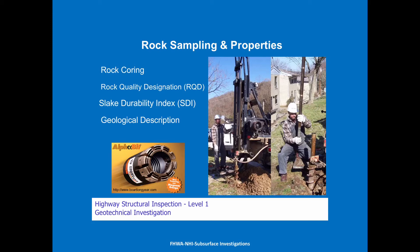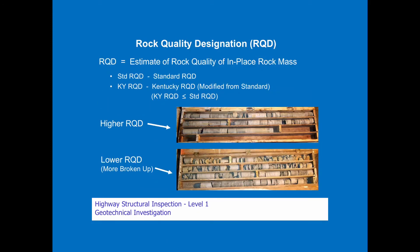Now rock sampling and properties. We're going to talk about rock coring, the Rock Quality Designation or RQD, the Kentucky RQD, the Slake Durability Index, and the Geological Description. RQD is the estimate of rock quality of in-place rock mass — sections that are four inches or larger get counted and get a percentage of the total run of five feet. Kentucky RQD is where we actually break those apart. Some shales we can break by hand, and we don't want to give those a high RQD count — they hold together in drilling but we break them apart. The Kentucky RQD will be less than the standard RQD because of this.